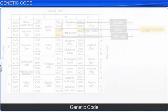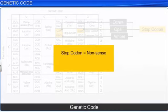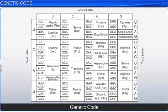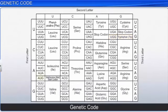Moreover, one codon codes for only one specific amino acid, which makes the genetic code unambiguous and specific. For example, the codon UGG codes for tryptophan. And AUG codes for methionine, as well as acts as a start codon, which means it initiates protein synthesis. The genetic code is also degenerate, which means that many different codons encode a particular amino acid. Take the case of serine, which is coded by six different codons including UCU, UCC, UCA, UCG, AGU, and AGC.